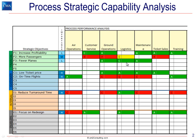A C on a low weighted objective earns it a green. And a C on this objective — on-time flights — which has a high weighting, turns red.